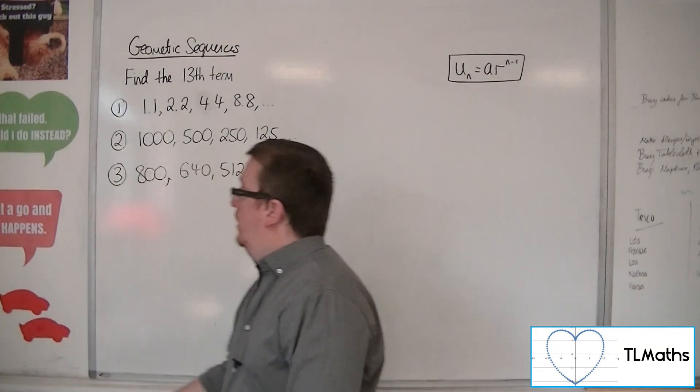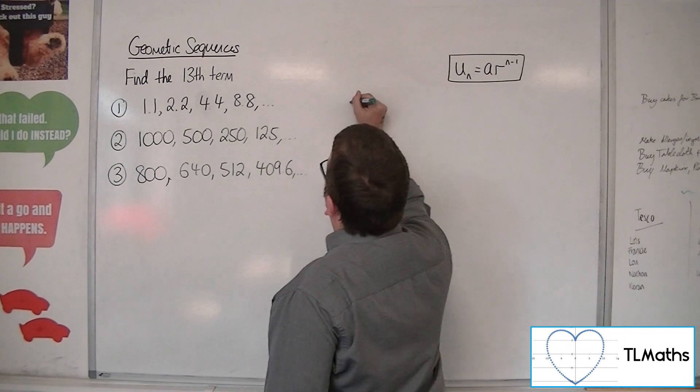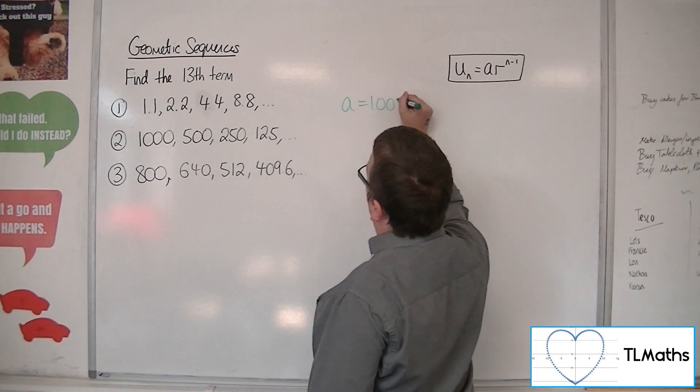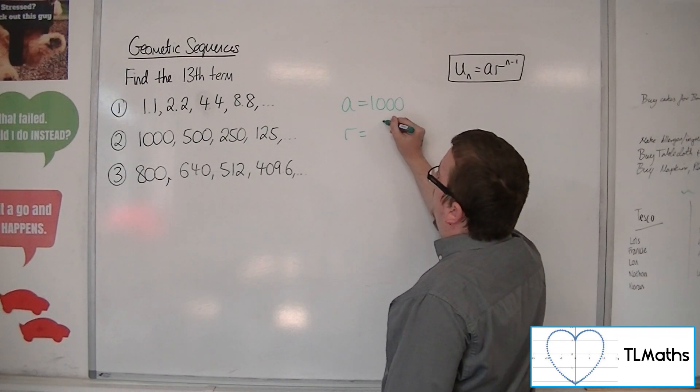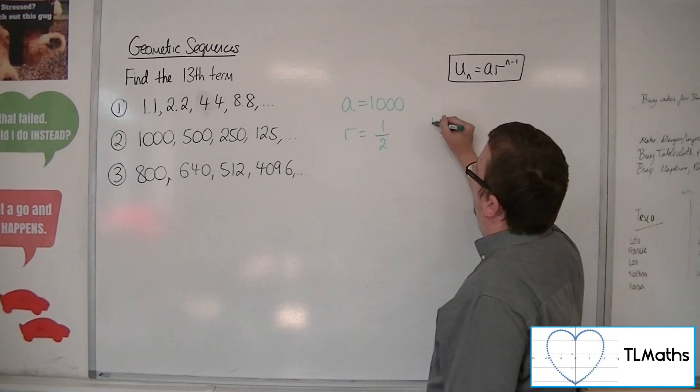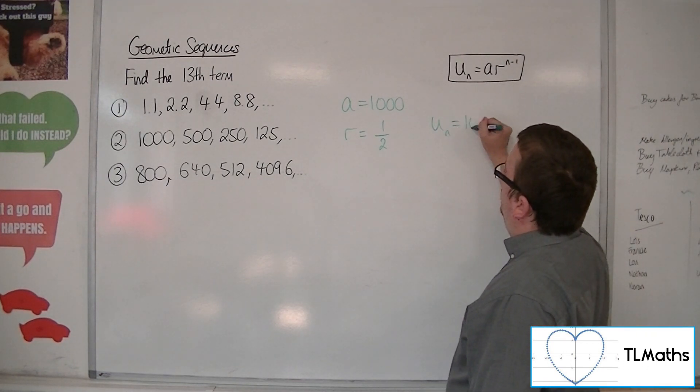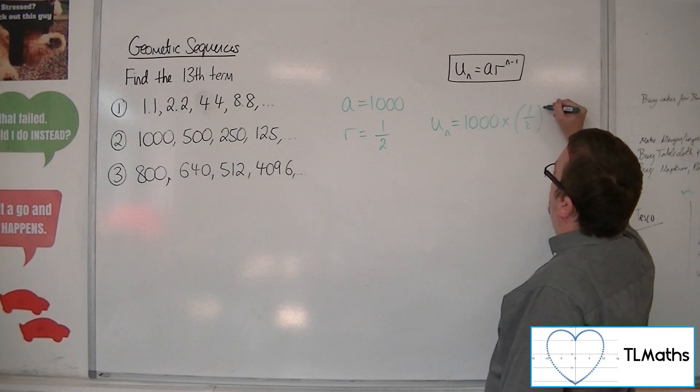Number 2, we have 1,000, 500, 250, 125. So the first term is clearly 1,000. The common ratio we're going to be dividing by 2 each time, so multiplying by 1 half. 500 divided by 1,000. So the nth term is 1,000 times by 1 half to the power of n minus 1.